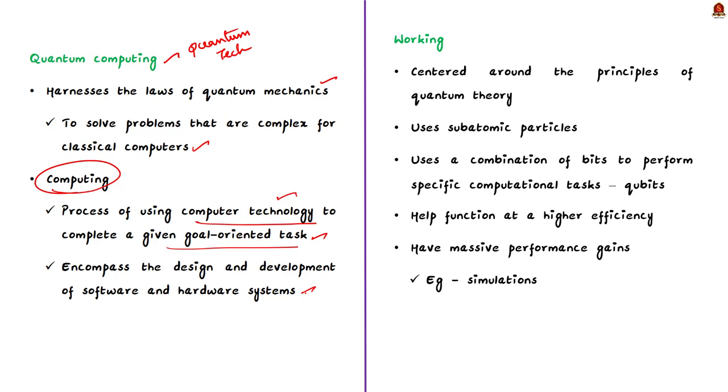Quantum computing covers the problems that are too complex for classical computers. Quantum computing focuses on the development of computer technologies that is centered around the principles of quantum theory. Quantum theory explains the nature and behavior of energy and matter on the quantum, that is, atomic and subatomic level. Quantum computing uses subatomic particles such as electrons or photons.